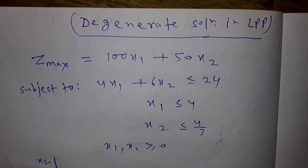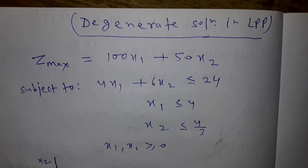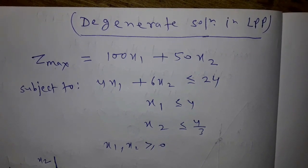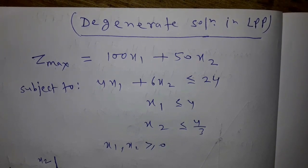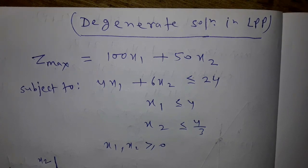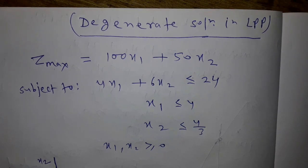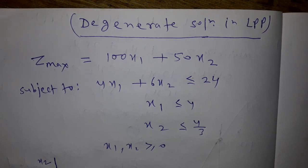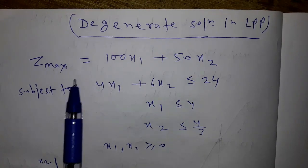Degeneracy is another special case of a linear programming problem (LPP). It occurs when at any corner point of the feasible region, more than two lines pass through that corner point. This can be understood using a simple example of a maximization type problem.